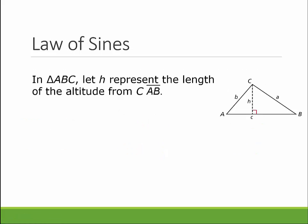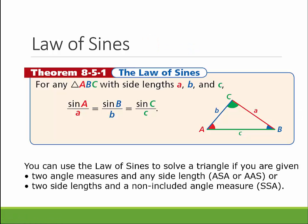We're actually going to do the proof of why the law of sines works tomorrow in class. For now, I'm just going to tell you what it is in the video and do some examples with it. So here is the law of sines: for any triangle ABC with side lengths A, B, and C, the sine of angle A divided by side length A equals the sine of angle B divided by side length B, and the sine of angle C divided by side length C. The lowercase letters are side lengths, and on top it's the sine of an angle — a ratio.